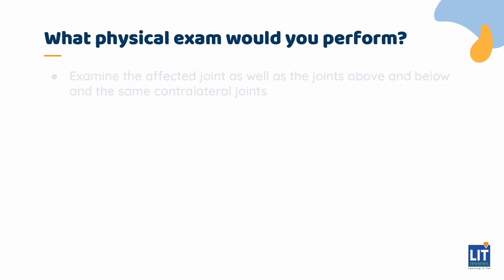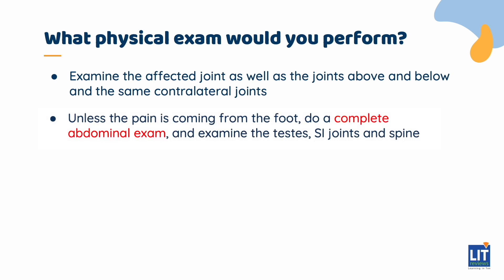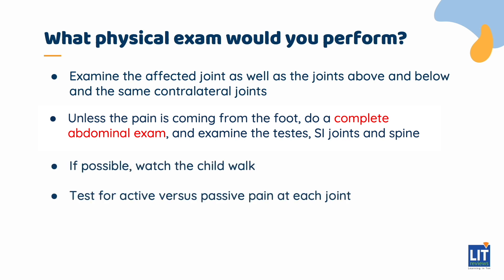When examining the child with a limp, you'll want to examine the affected joint as well as the joints above and below, and those same three joints on the opposite side of the body. Unless you're certain the pain is coming from the foot, you should also do a complete abdominal exam, testicular exam, and examine the sacroiliac joints, because appendicitis, testicular torsion, SI joint pain, and spinal epidural abscesses are all possible causes. Whenever possible, watch the child walk, test for active versus passive pain at each joint, and test for tenderness to palpation — using distraction to help determine the true severity of the pain.